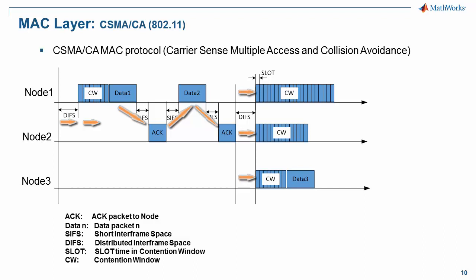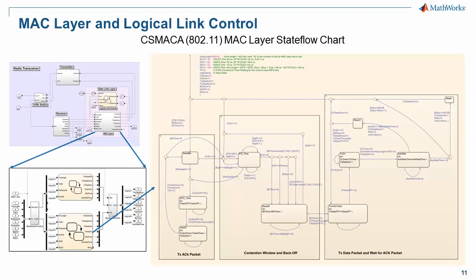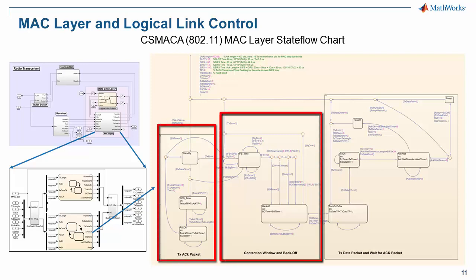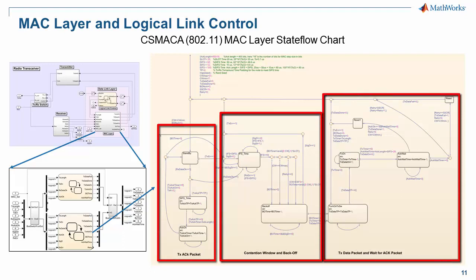This is also the mechanism used in 802.11 MAC. As shown in the MAC state flow chart, there are three functional blocks: TX of ACK frame, contention window and backoff, and TX of data frame. The inputs of this block are from the physical layer and the logical link control block. The MAC output signal controls the transmitter for sending data or ACK frames in a regulated order. This chart also shows the simplicity of using a state flow chart to model the intelligence of a MAC layer.